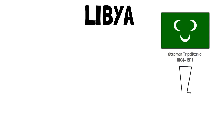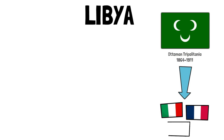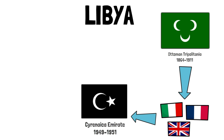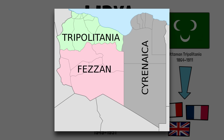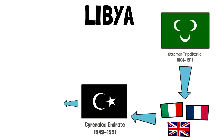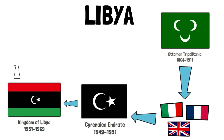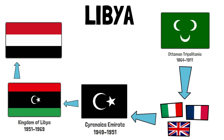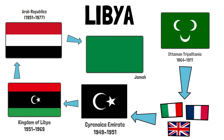Libya's first flag was that of the Ottoman protectorate of Tripolitania — an all-green flag with three white crescents, used between 1864 and 1911. After this, Italian, French, and British occupation followed, until the Cyrenaica Emirate was created, lasting from 1949 to 1951, using an all-black flag with a white crescent and star. In 1951, the Kingdom of Libya was created using the current Libyan flag until 1969. A coup led to a change in regime, and the new flag of the Arab Republic was based on that of Egypt, even joining the country in the Arab Islamic Republic in 1972. From 1977 to 2011, they used a plain green flag, then going back to the flag of the Kingdom with another regime change.